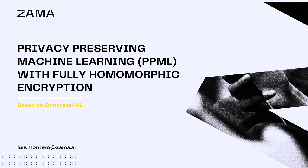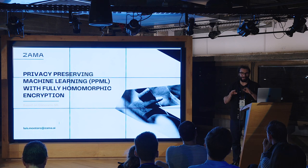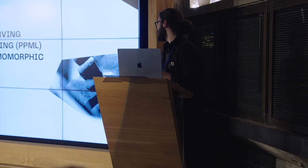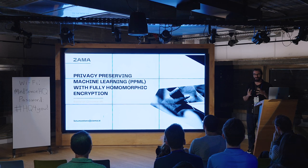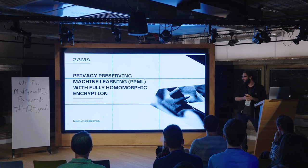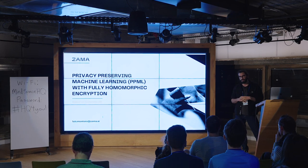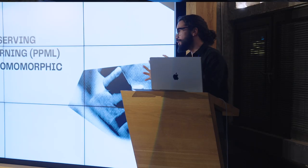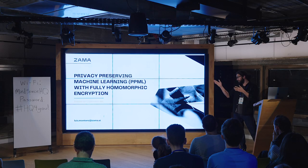I'm Louis, a machine learning engineer at Zama. I'm not at all a cryptographer, so I have a basic understanding of what all of you are doing. I still attended the workshops — very interesting stuff. I'm going to talk about what we do at Zama. Zama is a company focusing on fully homomorphic encryption and different applications of it, one of which is privacy-preserving machine learning.